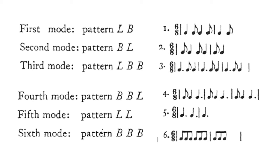Numbers one and two are quite straightforward. If you have a longa and a brevis, or a brevis and a longa, as part of the same beat, then the longa will be two subdivisions and the brevis will be one. Mode one would be long-short, long-short, long-short; and mode two would be short-long, short-long, short-long.